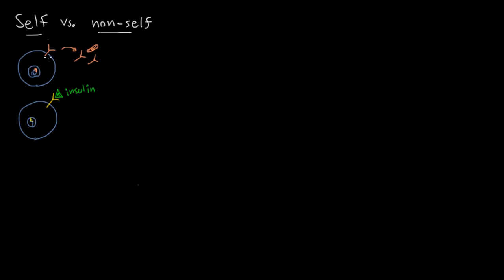So how can you keep your body from making B cells that would react to yourself? In fact, there's no way to prevent it, because the process of creating different B cell receptors and antibodies is totally random. So your body can't help making self-reactive B cells — instead, it needs to figure out which ones are reacting to self and get rid of them.